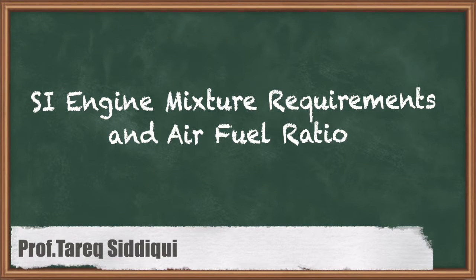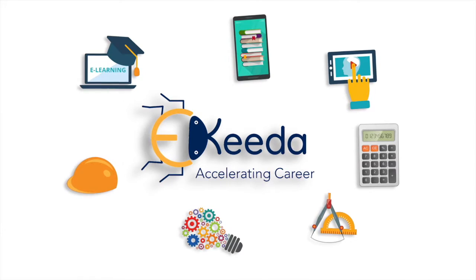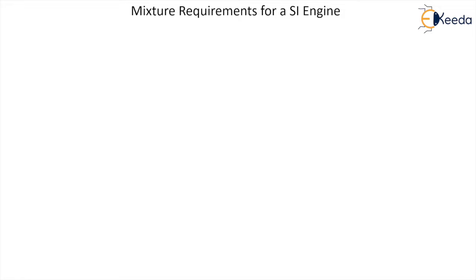In this lecture we are going to see what are the different mixture requirements and their needs for an IC engine of spark emission type. Mixture — first of all let us see and understand what this word means. Mixture means the combination of air and fuel in a definite proportion meant for combustion in a SI engine.